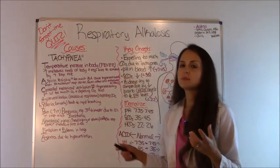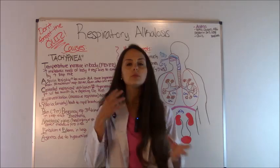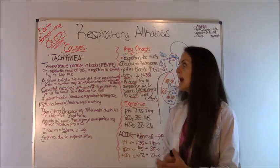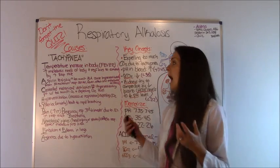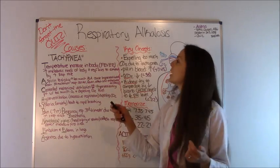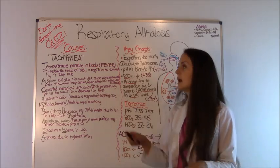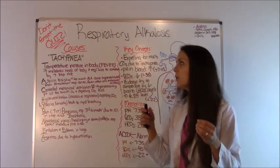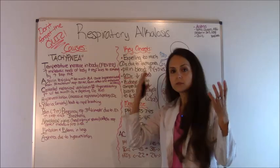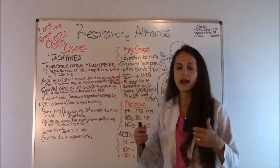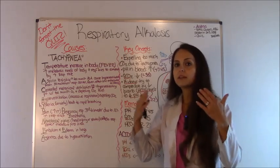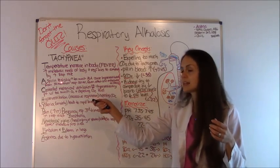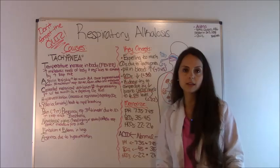Now let's look at the causes of respiratory alkalosis. We've established that you're breathing too fast and hyperventilating — you're having tachypnea. I want to use the mnemonic TACHYPNEA, where each letter correlates with a cause. T stands for temperature increase, also known as fever. When you have a fever it increases the metabolic needs of your body, and to compensate the respiratory center tries to increase the respiratory rate, causing hyperventilation and excessive loss of carbon dioxide.